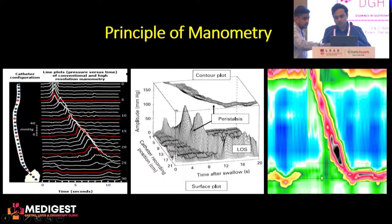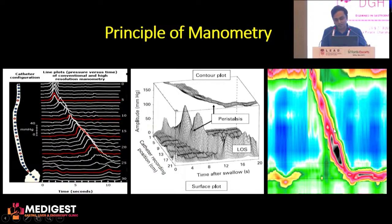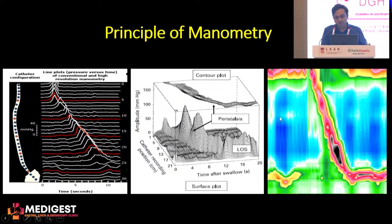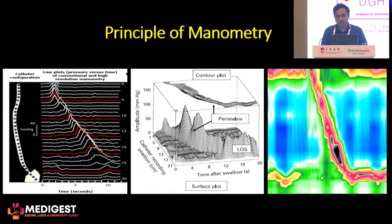The actual peristalsis occurring is in three-dimensional mode, but what you see on the screen is in two dimensions — so what we actually see are colors. Warm colors like pinks, maroons, or blacks represent high pressure zones, and cool colors — blues, greens, and yellows — represent lower pressures. In areas of high pressure the waves travel downward over time, and the cooler colors represent areas of relaxation of the sphincter. This is what we actually see in a manometry graph.